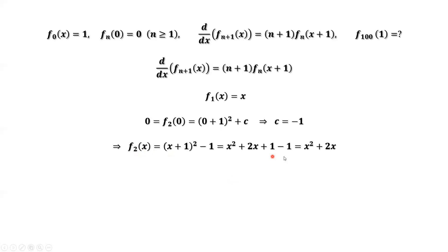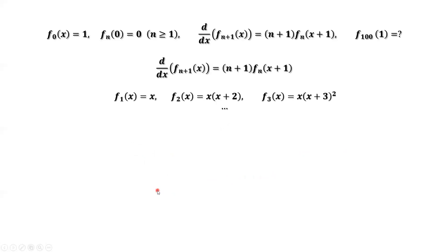So f2 of x equals x squared plus 2x. We factor x out from the right-hand side, giving f2 of x equals x times (x+2). Similarly, we can find f3 of x equals x times (x+3) squared. Now we can see the pattern: here is 3, here is 3, and here is 3 minus 1.